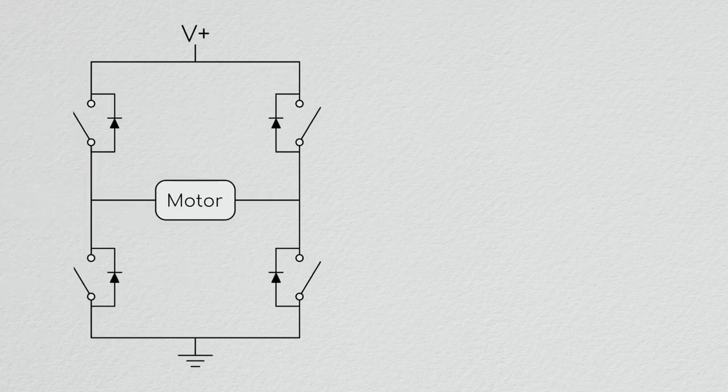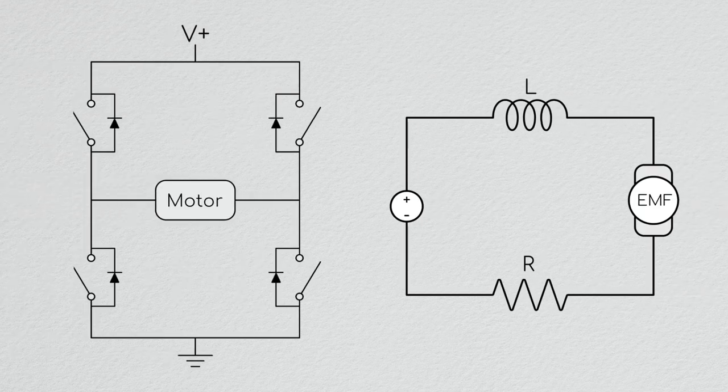By utilizing the H-bridge, as well as the motor's electrical dynamics, we can now drive a motor bi-directionally and with specific torque. Next episode, we're going to look at what causes motors to fail, and how it helped to drive the modern move to brushless motors.